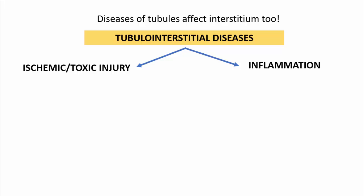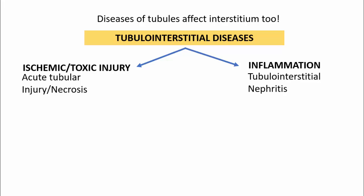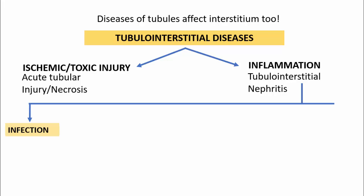The ischemic or toxic injury resulting in tubulo-interstitial disease is referred to as acute tubular injury or acute tubular necrosis. When we talk about inflammatory causes of tubulo-interstitial diseases, these are referred to as tubulo-interstitial nephritis — meaning inflammation. Tubulo-interstitial nephritis can be because of infection and non-infection causes.